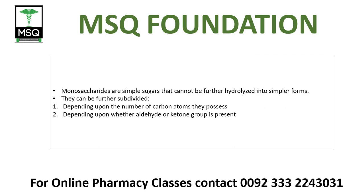Students, monosaccharides ko jab hum define karte hain to hum kehte hain they are the simplest sugars that cannot be further hydrolyzed. Mono ka matlab 'one' hai, saccharides se murat 'saccharin' hai. Hydrolysis ke baad bhi agar ye single hi rahe ga to hum aise sugars ko monosaccharides ka naam dete hain.